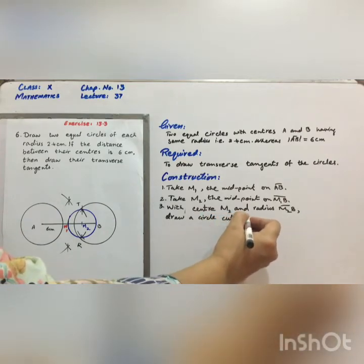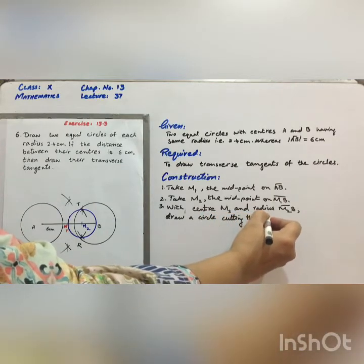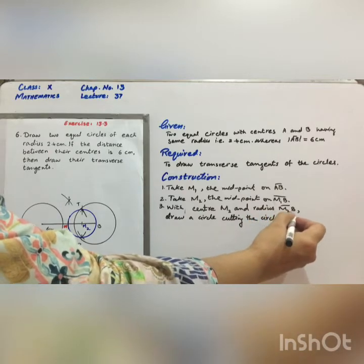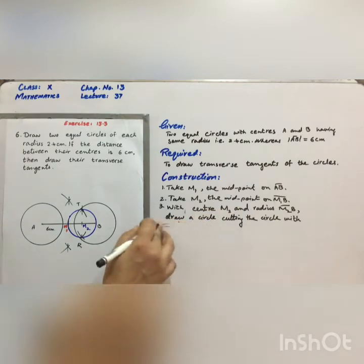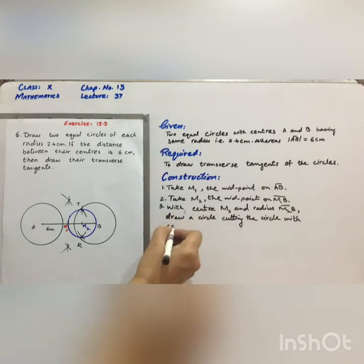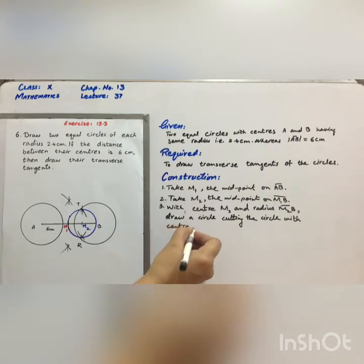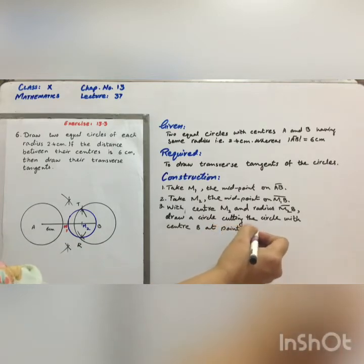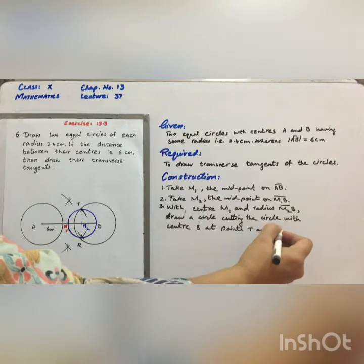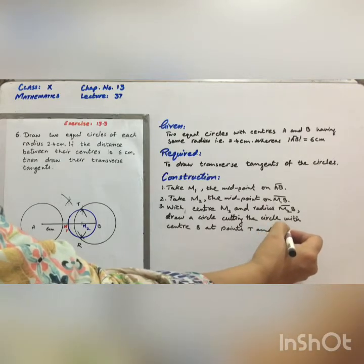Cutting the circle with center B at points T and R respectively.